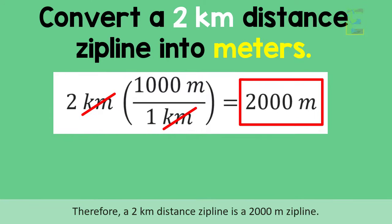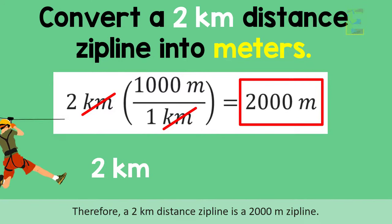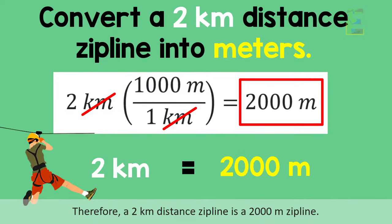Therefore, a 2 kilometer distance zipline is a 2,000 meters zipline.